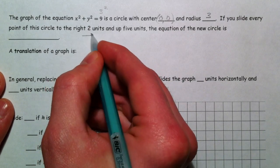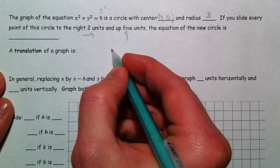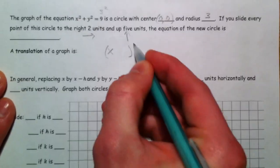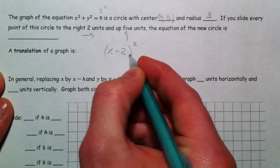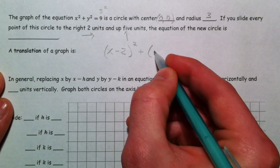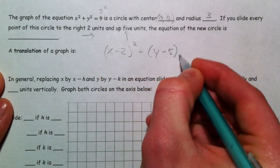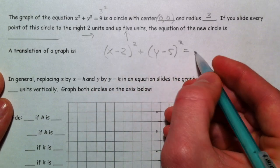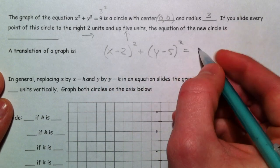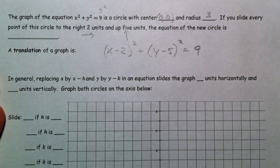If you slide every point of the circle to the right 2 units and up 5 units. So, right 2 and up 5. The equation of the new circle, if I want to go right 2, I'm going to want to do the opposite. x minus 2 will give me to the right 2. And y, to go up 5, I'm going to have to do minus 5.